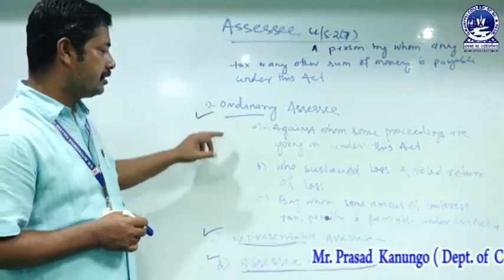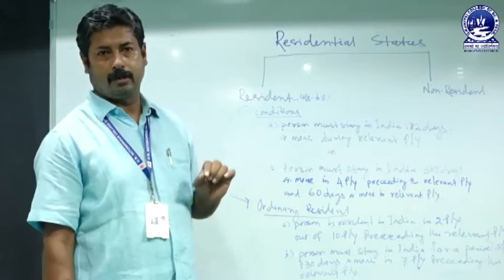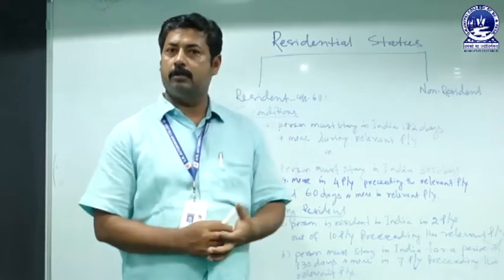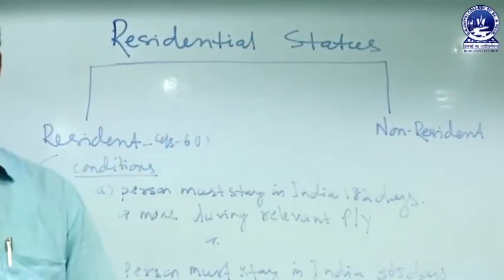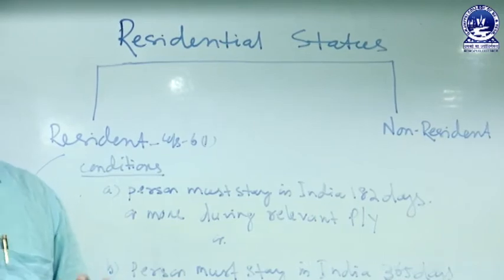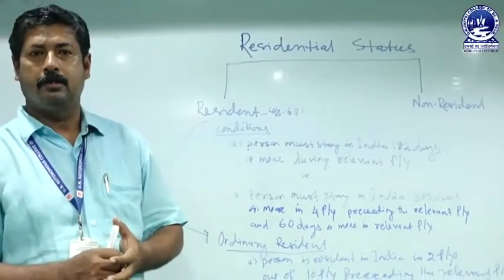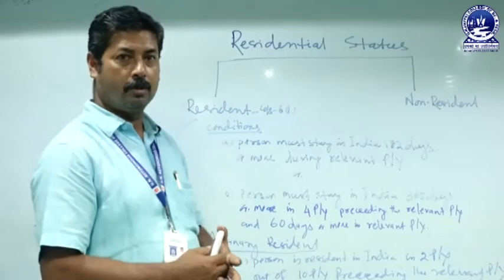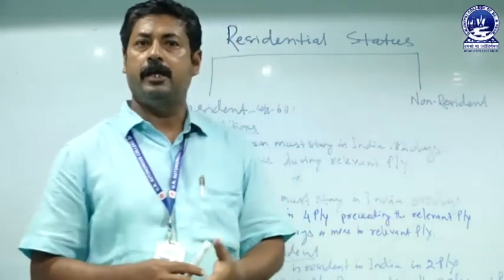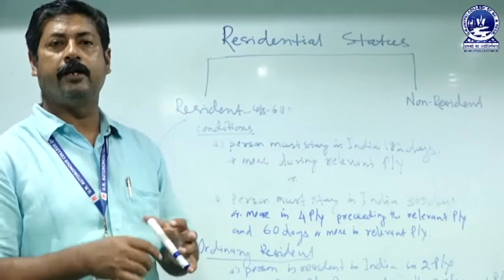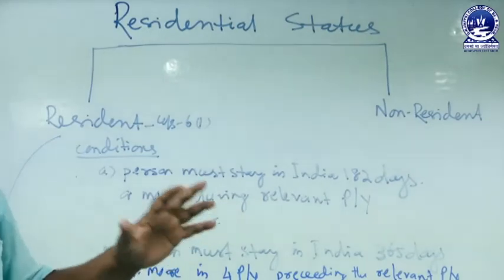So these are the three types of assessee: ordinary assessee, representative assessee, and assessee in default. The total income of the assessee is determined as per the income tax law on the basis of the residential status of the assessee. As per Section 6, clause 1, the assessee may be a resident or a non-resident. Even an Indian citizen may be treated as a non-resident, and a foreign citizen may also be treated as a non-resident. The residential status is determined on the basis of the number of days stayed in India.